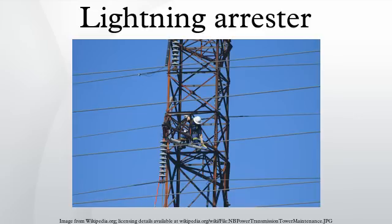A lightning arrester is a device used on electrical power systems and telecommunication systems to protect the insulation and conductors of the system from the damaging effects of lightning. The typical lightning arrester has a high voltage terminal and a ground terminal. When a lightning surge travels along the power line to the arrester, the current from the surge is diverted through the arrester, in most cases to Earth. In telegraphy and telephony, a lightning arrester is placed where wires enter a structure, preventing damage to electronic instruments within and ensuring the safety of individuals near them.